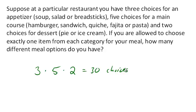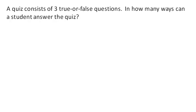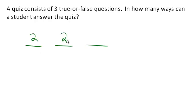One more. Suppose a quiz consists of three true or false questions. How many ways can a student answer this? We have three questions, and each of those questions has two choices. So the first question has two choices, the second question has two choices, and the third question has two choices. All together, there are two to the third, or eight different ways, that a student could answer a three-question true or false quiz.